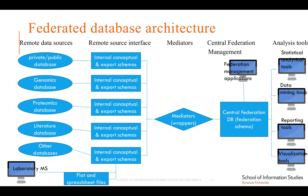This is an architectural diagram example of a federated database system. Remote data sources are integrated through a central federation management system. Integrated data is then presented to many analytical tools in a coherent, unified interface. The federation architecture often includes mediators, which are software agents that translate queries from a global format to local formats for specific databases. Mediators thus run queries against distributed data and return the results to a single federated dataset. New data sources can be added quickly to the federation by creating wrappers for those sources.